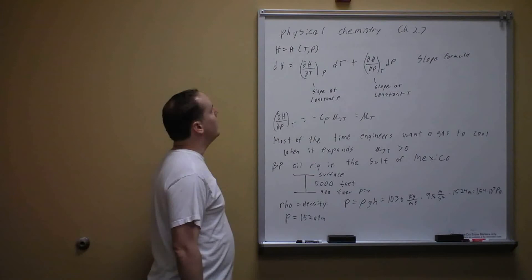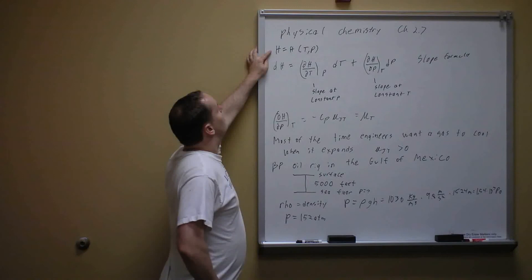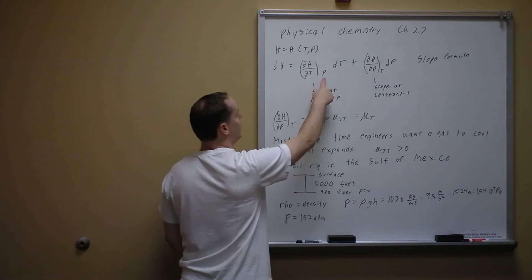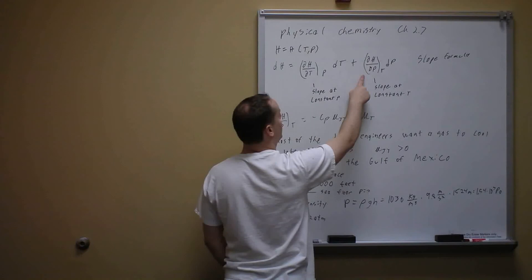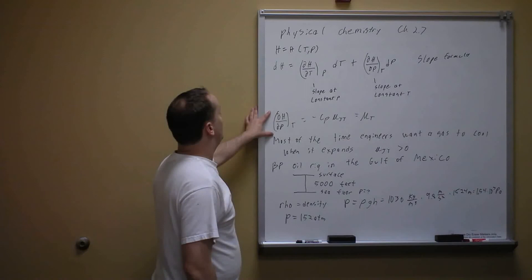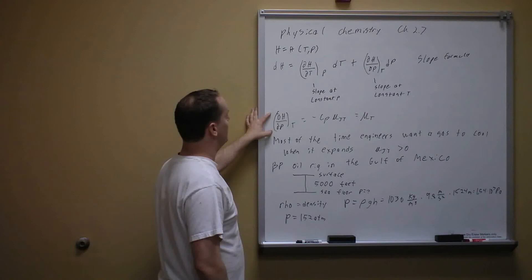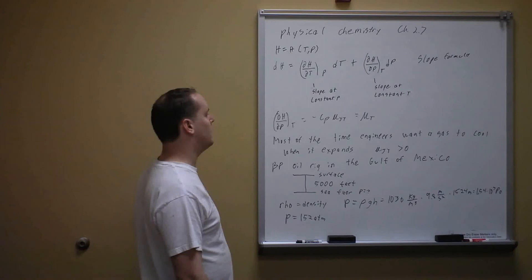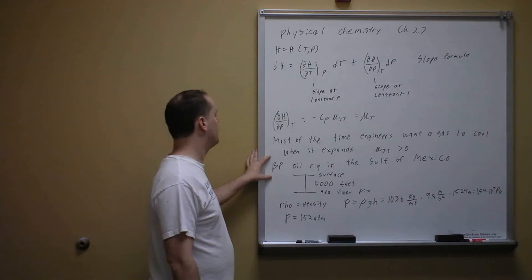Since enthalpy is a function of temperature and pressure, its total differential is: dH equals dH/dT at constant P times dT, plus dH/dP at constant T times dP. The first term gives the slope at constant P (which is Cp), and the second term gives the slope at constant T. The derivative of enthalpy with respect to pressure at constant temperature equals minus Cp times μJT. For engineering applications, gases are typically desired to cool on expansion, meaning μJT greater than zero is preferred.